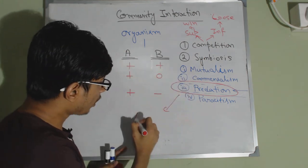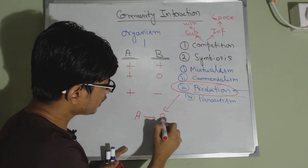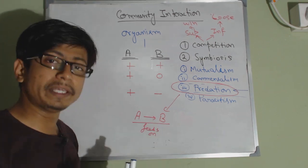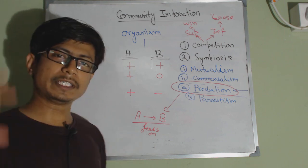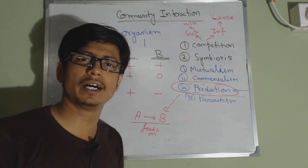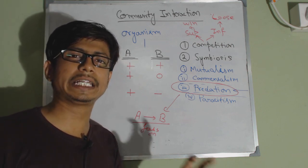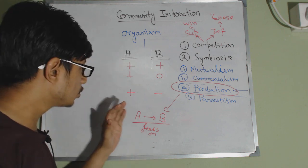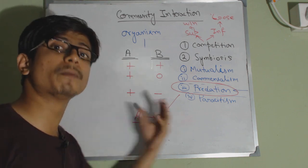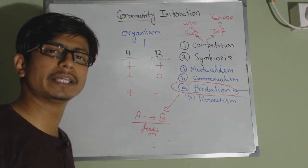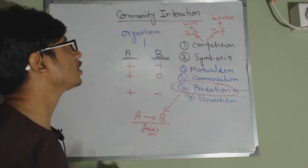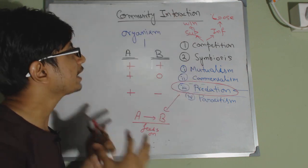In predation, organism A feeds on organism B — one species relies on another species as a food source. For example, a wolf eating a rabbit: the wolf population depends on the rabbit population because if there are rabbits, wolves can eat them and grow. That is predation. These are the different kinds of interactions we can see in an ecosystem.